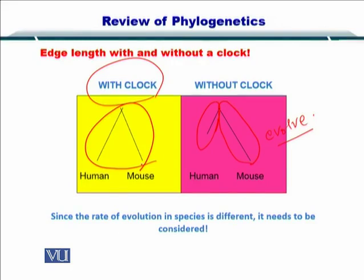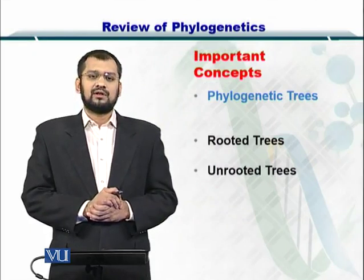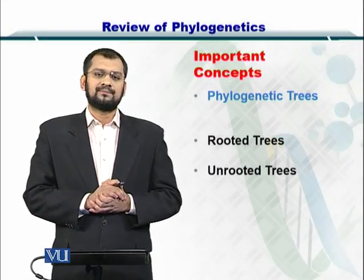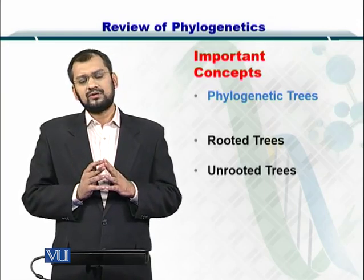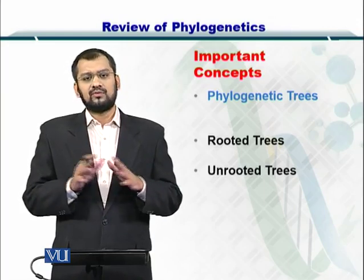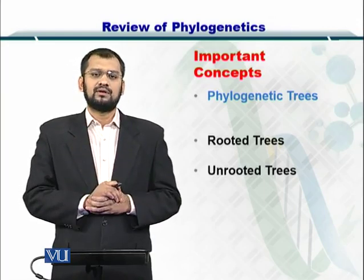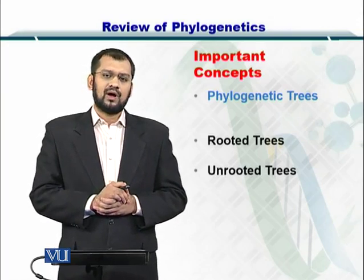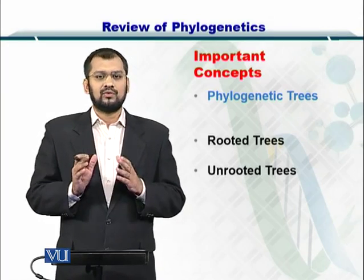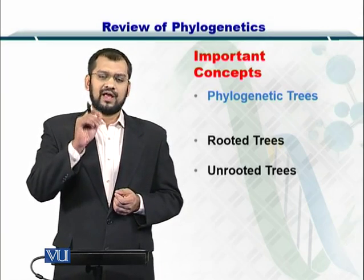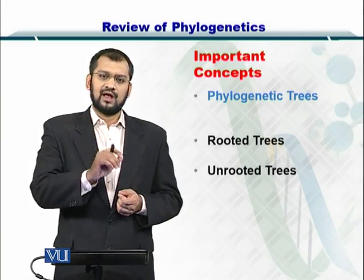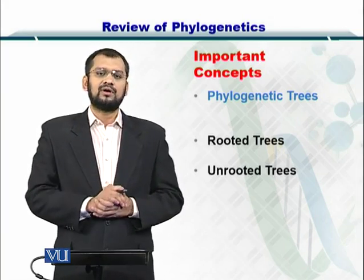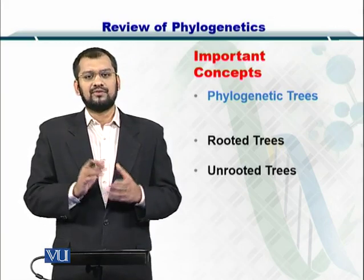The phylogenetic trees also included rooted and unrooted trees. For unrooted trees, there is no parent for the siblings or children. In rooted trees, there is always an ancestor and the remaining children are lower than the ancestor.